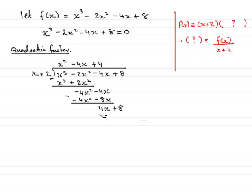4 times x, 4x. And then 4 times the plus 2 is plus 8. Subtract to find the remainder. And as hoped, the remainder was 0. 0 because we knew that x plus 2 was a factor of f of x. So what that means now is that therefore f of x is identical to x plus 2 multiplied by the quadratic factor x squared minus 4x plus 4.